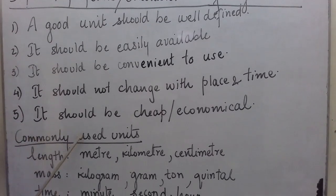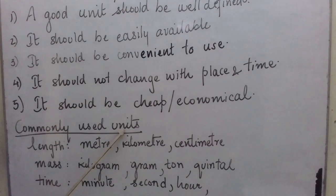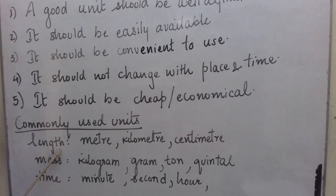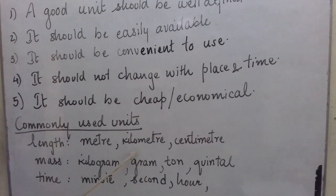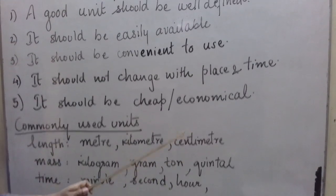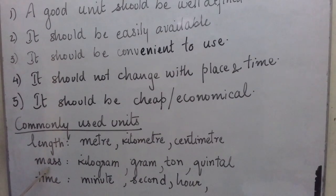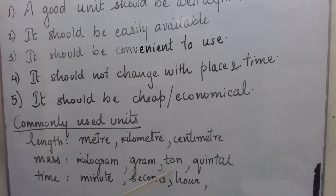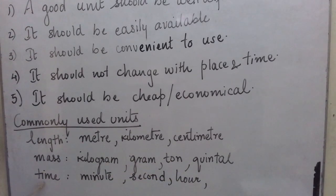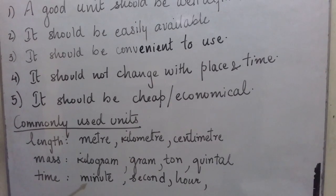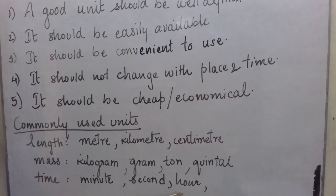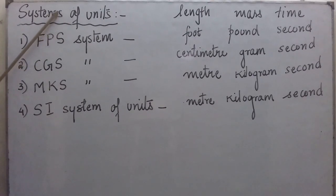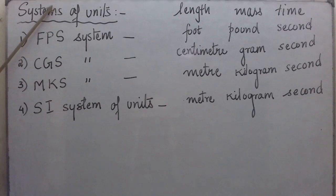We already know that commonly used standard units for length, mass, and time are as follows. For length, commonly used units are meter, kilometer, centimeter, and there are many more. Similarly, for mass, some commonly used units are kilogram, gram, pan, and quintal. For time, commonly used units are minute, second, and hour. Now let us see a few systems of units which are commonly used for units of physical quantities.